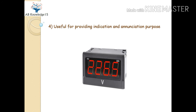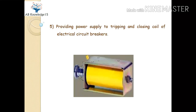The fourth use is for providing indication and annunciation purposes. DC power supply from the battery bank is useful in indication and annunciation systems. The fifth use is providing power supply to the tripping and closing coils of electrical circuit breakers. Electrical circuit breakers are used for control of the plant — for switching on and off motors, transformers, and feeders. DC power from the battery bank can be used for this purpose in case AC power has failed, allowing you to make switching operations as per requirement.